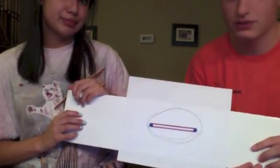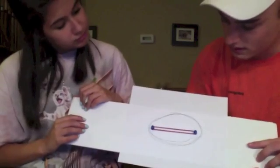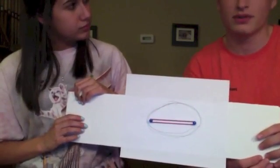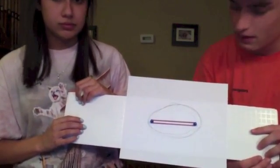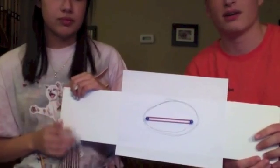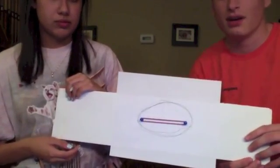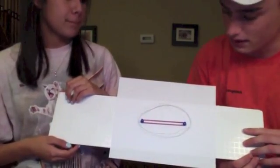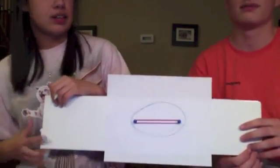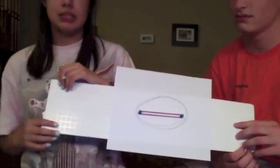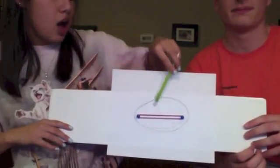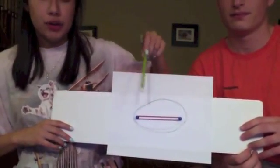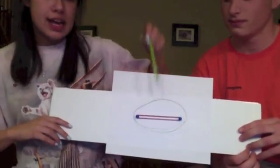Once you finish drawing this, you understand the concept of Kepler's First Law, which is that all planets orbit in a path that resembles an ellipse with the sun located as one of the foci. An ellipse is a special curve in which the sum of the distances from every point on the curve to two points is a constant.